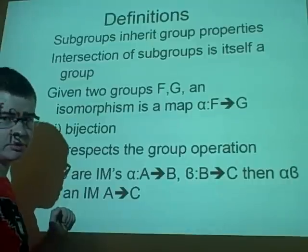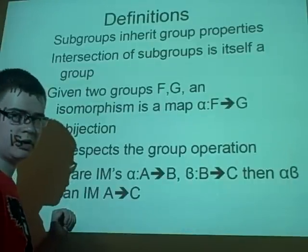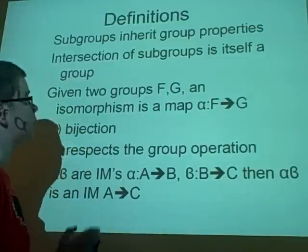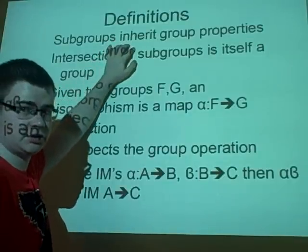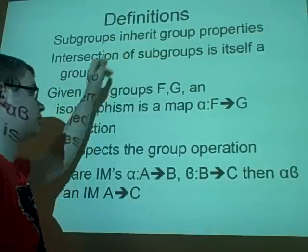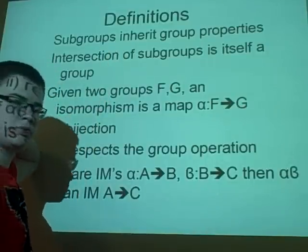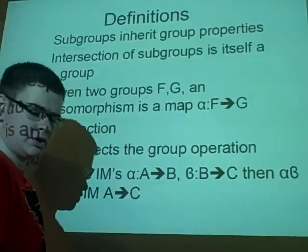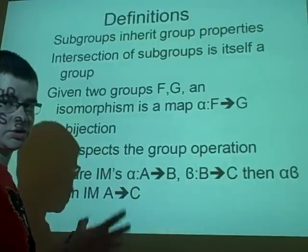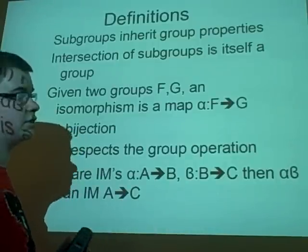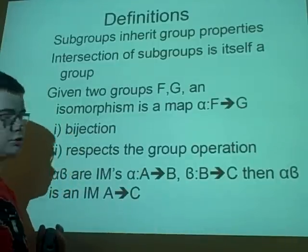Subgroups inherit the group properties, so if you have a group and you take another one from it, it will have inverses, it will have closure, it will have everything like that. Intersections of subgroups is a group in itself — so you have two groups and another group which lies between them, and that's a different group. You have to check that it's a group as well.